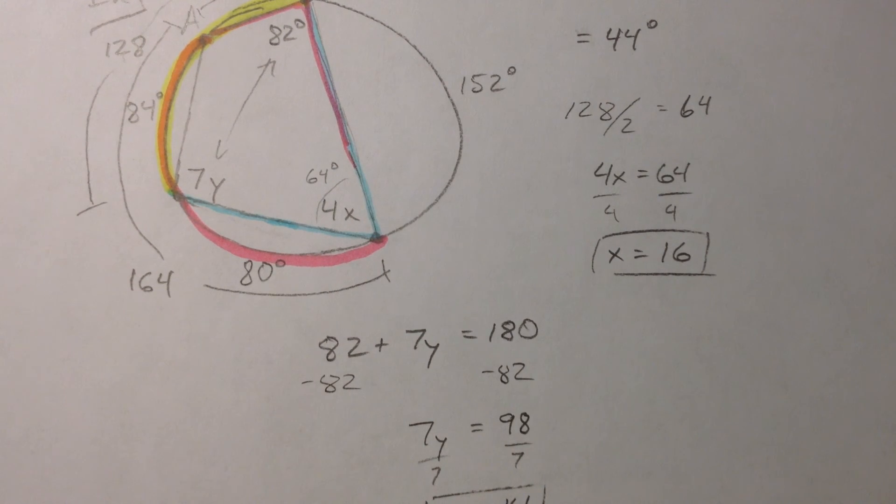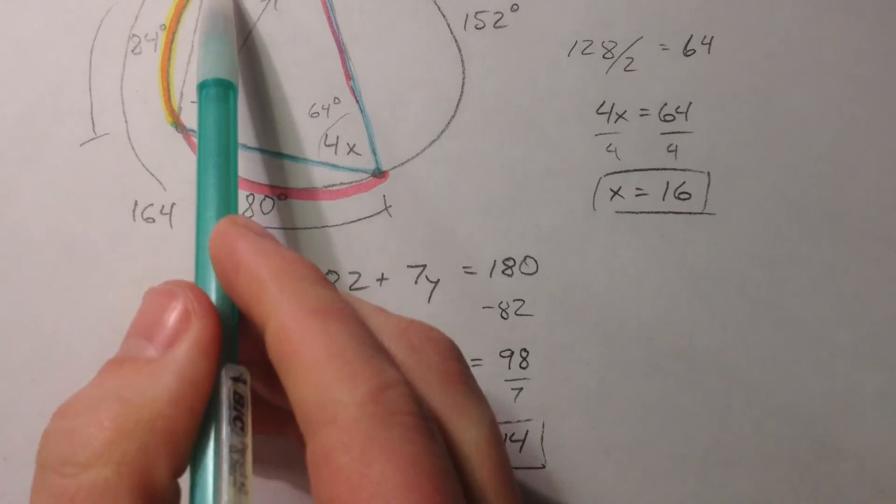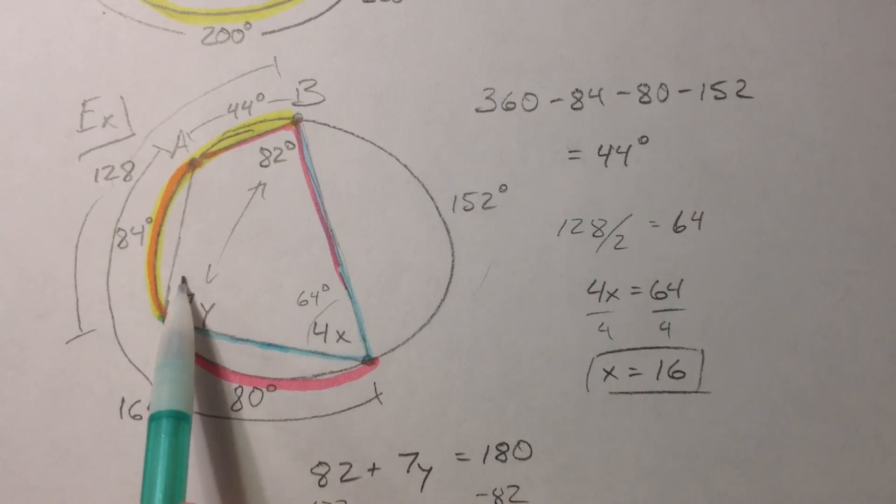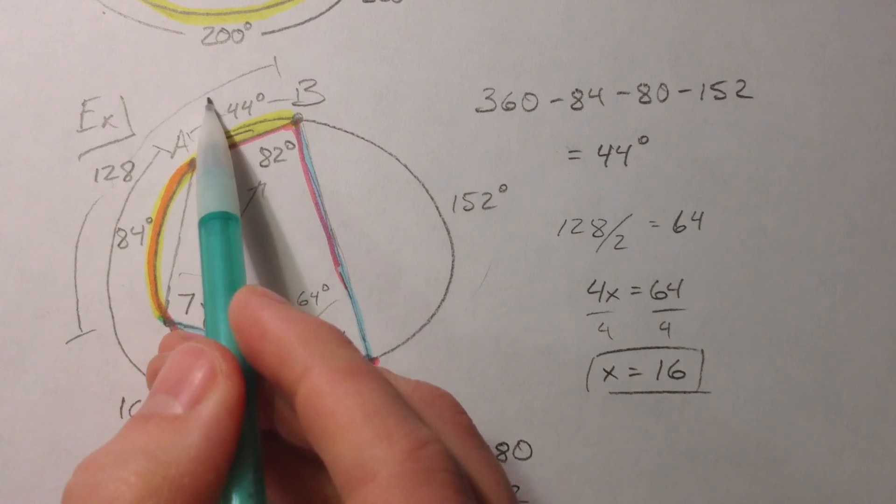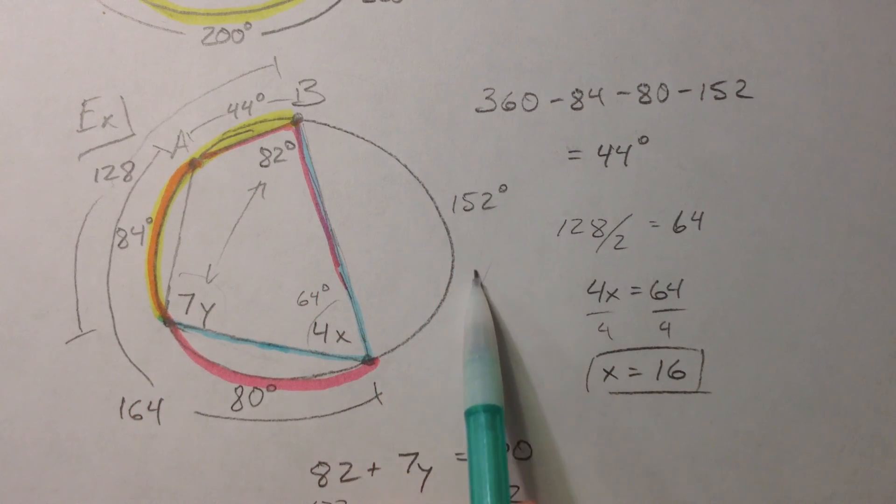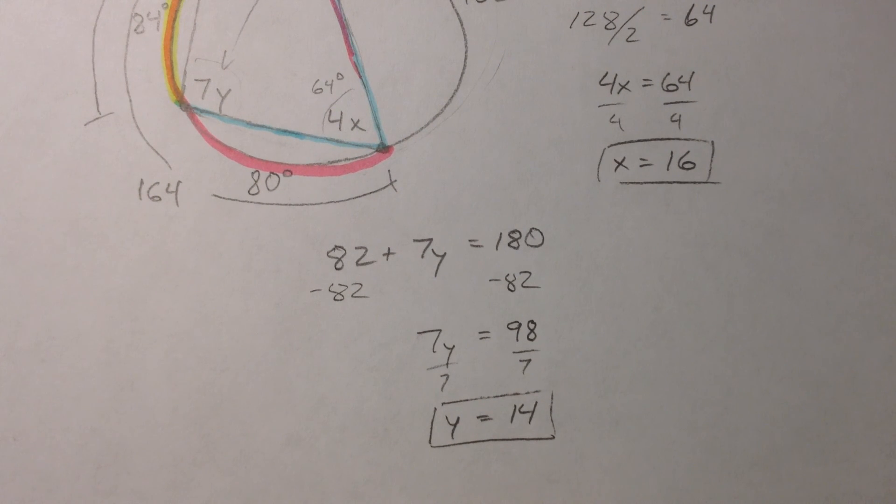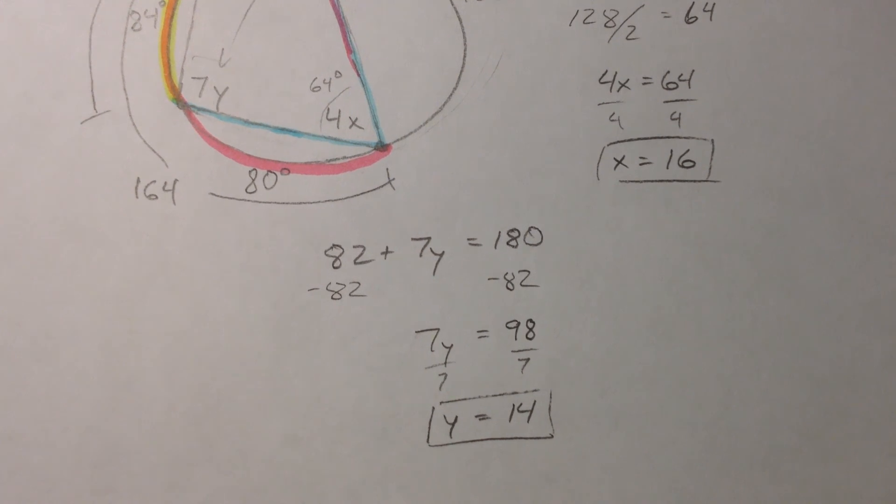Now I could have just simply done the same thing that I did before and calculated, oh, 7y is an inscribed angle and it's half of whatever 44 plus 152 is, and I could have done the same thing there. Multiple ways to approach these problems, very puzzle-like. So just keep searching, look for the inscribed angles, look for the intercepted arcs, and look for those opposite angles to add up to 180.